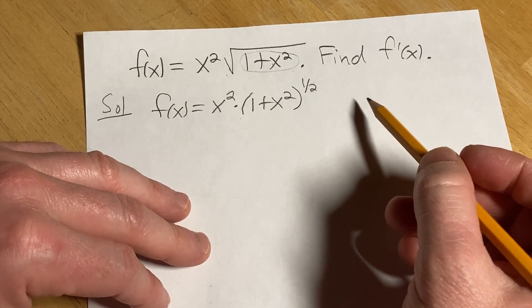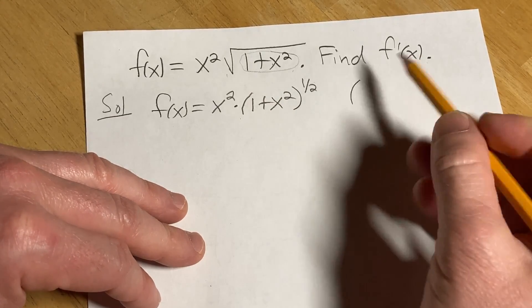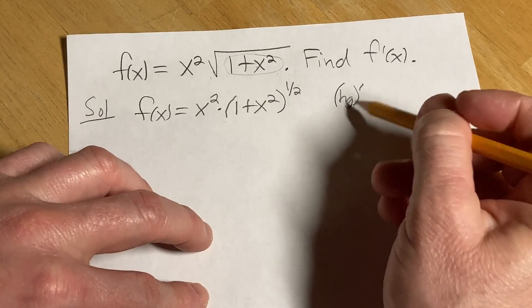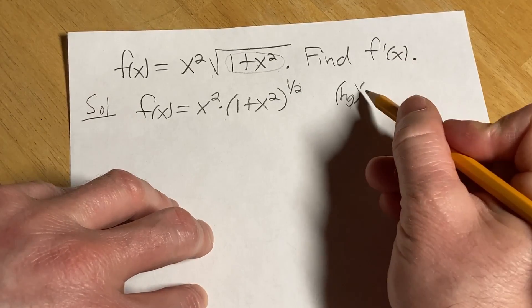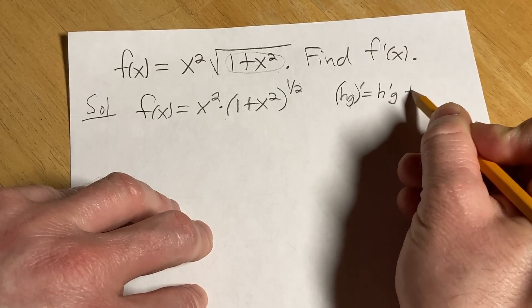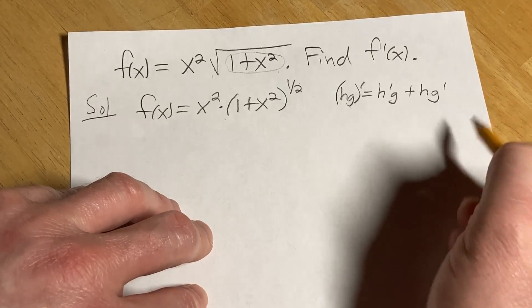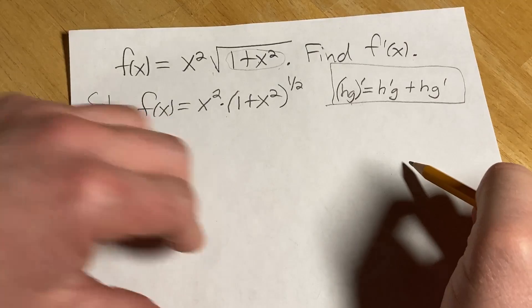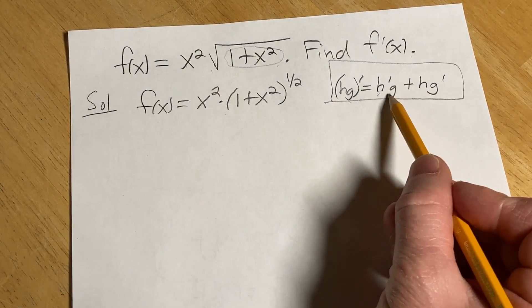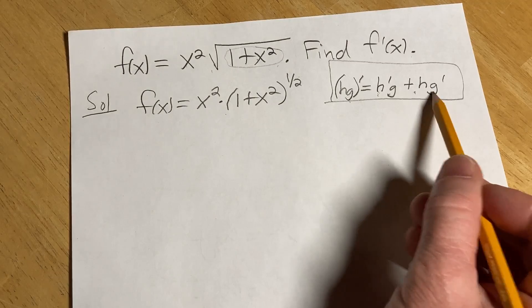Now we're going to apply something called the product rule. The product rule says if you have two functions, I'll use h and g, and you take the derivative. Think of h as your first function and g as your second. It's the derivative of the first times the second plus the first times the derivative of the second. So this is called the product rule for derivatives.